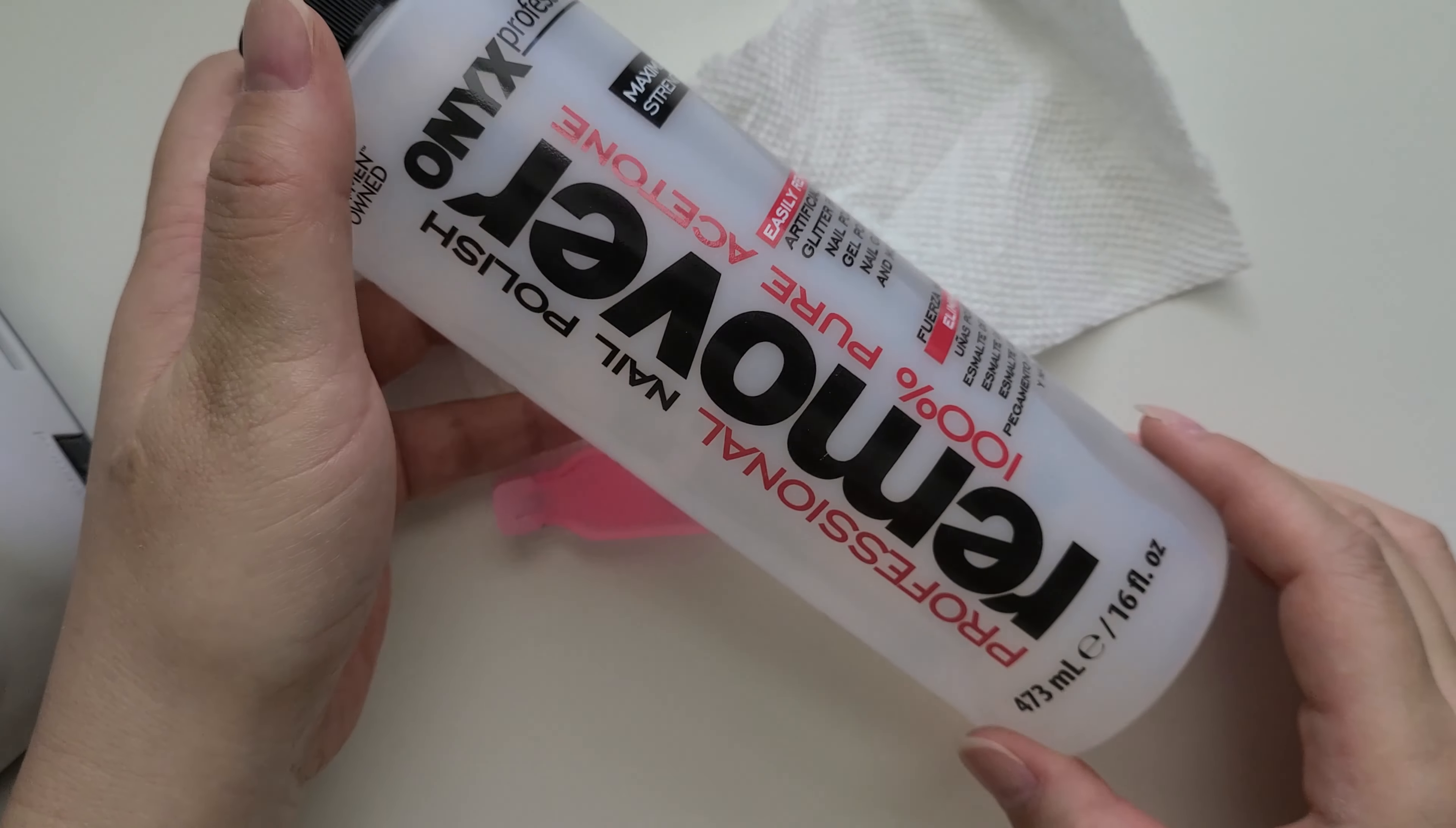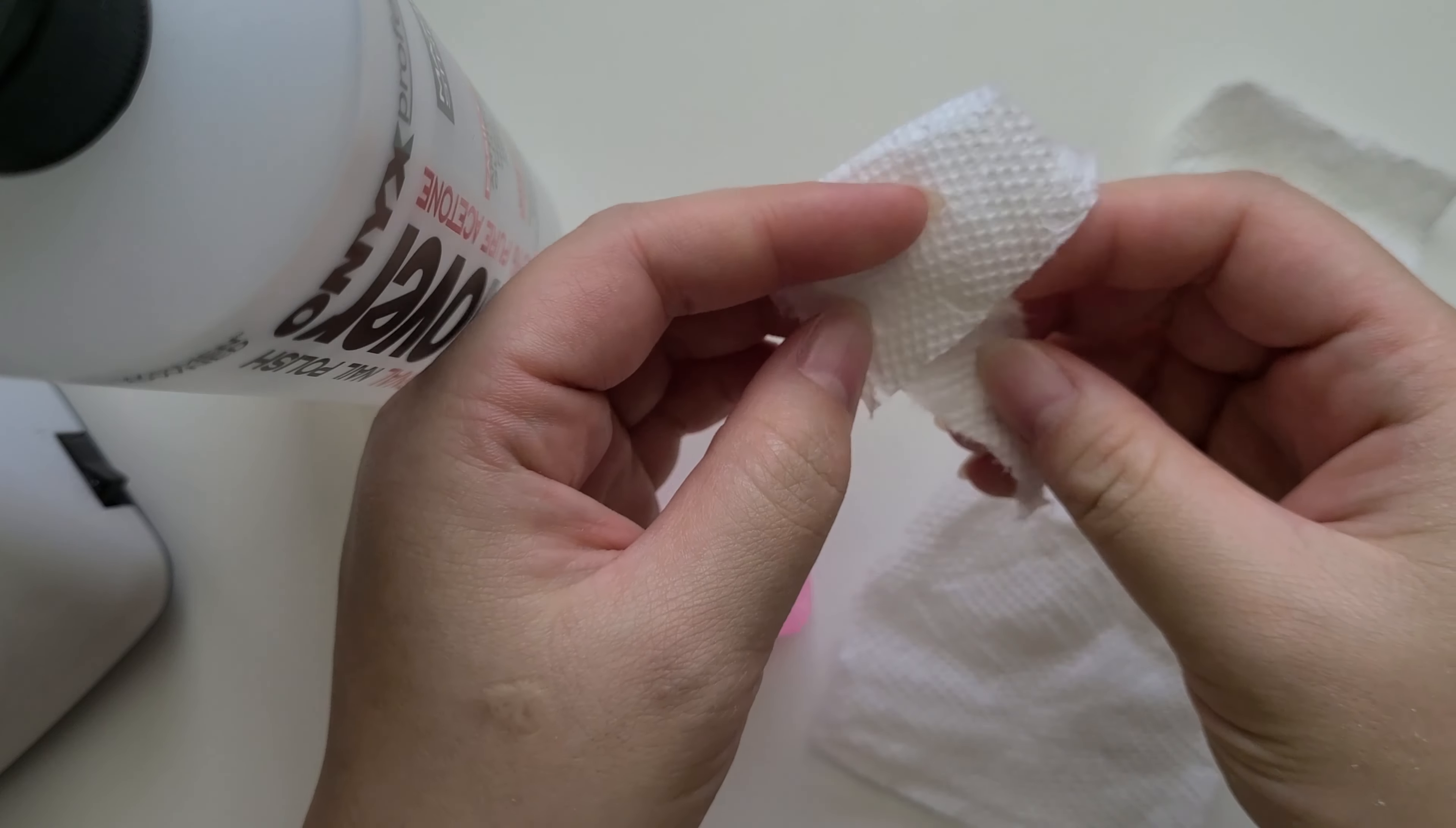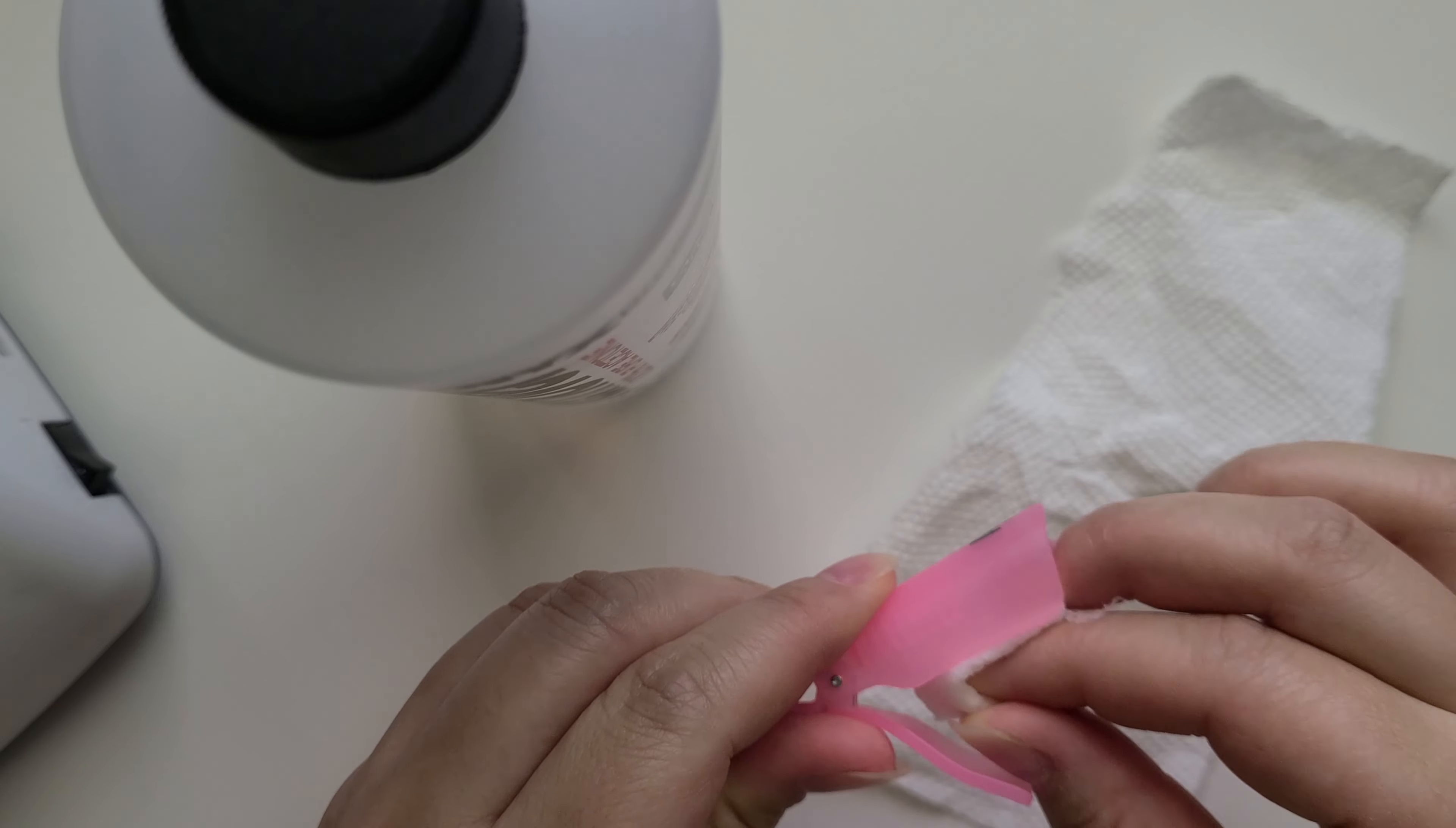You want to soak off the remaining gel with pure acetone and some sort of nail wrap. Here I love to use bouncy paper towels and a nail clip, however you can use aluminum foil, I suggest heavy-duty, and a cotton ball or also paper towel, whatever you want to do.